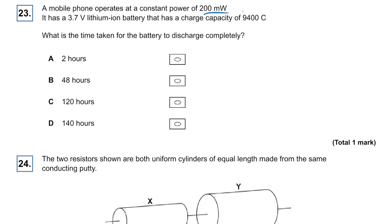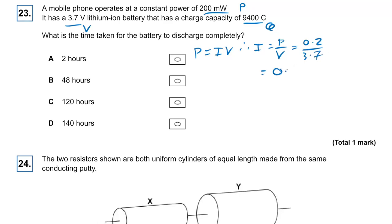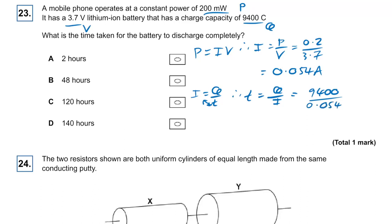Question twenty-three: a mobile phone with power 200 milliwatts and voltage 3.7 volts, with charge 9400 coulombs. Current equals P over V: 0.2 divided by 3.7 equals 0.054 amps. Time equals charge over current: 9400 divided by 0.054 equals 174,000 seconds. Dividing by 3600 gives 48 hours. The answer is B.